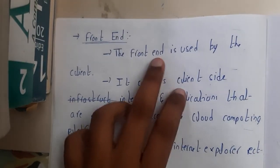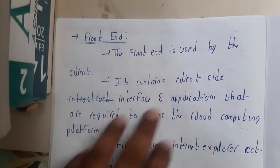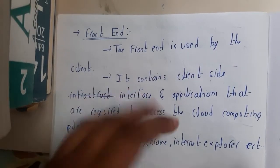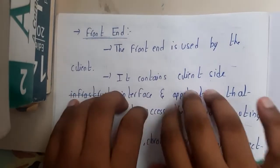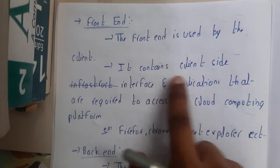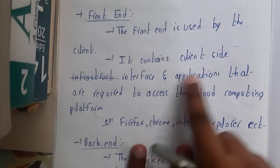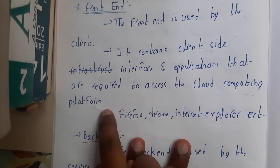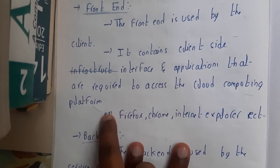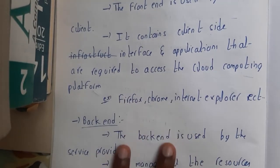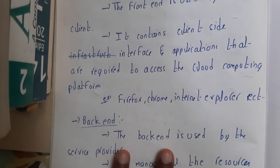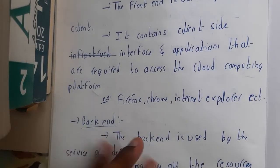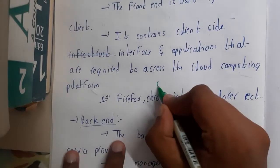The front end is used by the client. The client will be using it and modifying things — he can change things. It contains a client-side interface and applications that are required to access the cloud platform. By applications we mean something like Firefox, Chrome, Internet Explorer, or any kind of web browser.